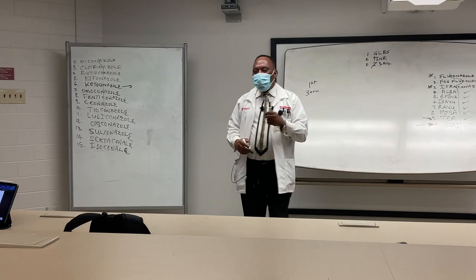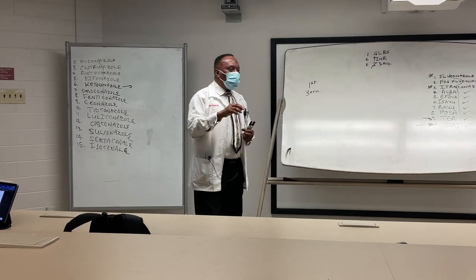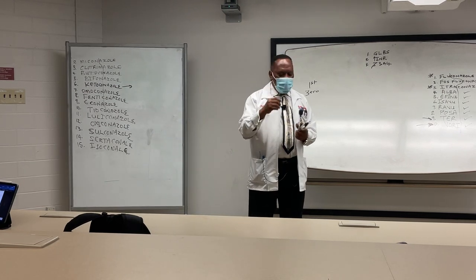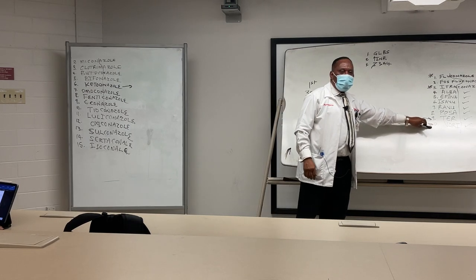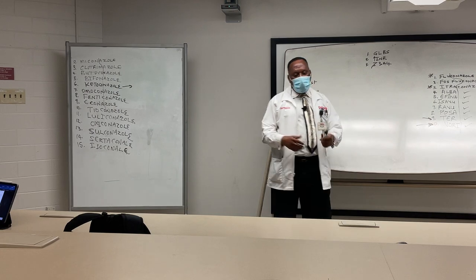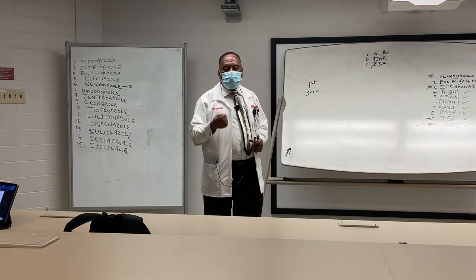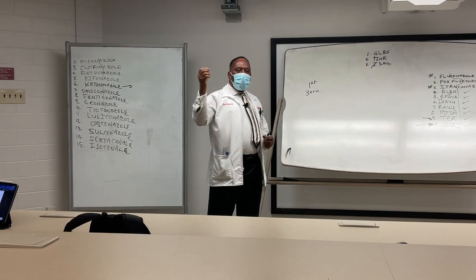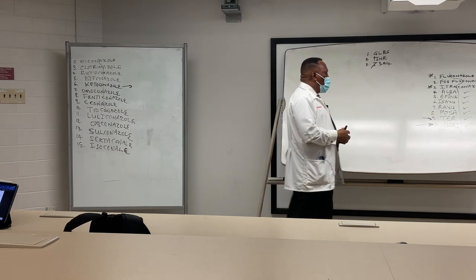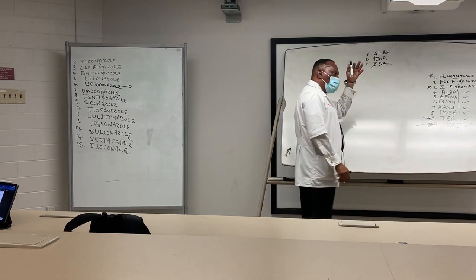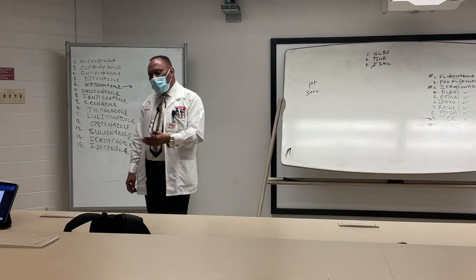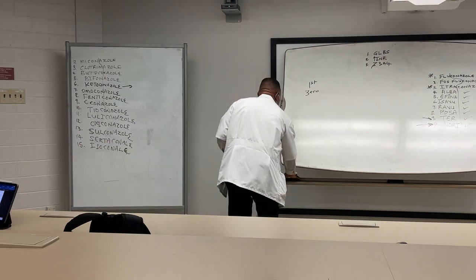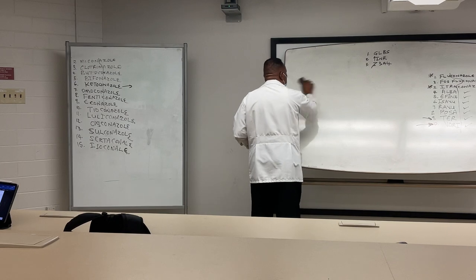If you give voriconazole concurrently with an agent that inhibits CYP3A4, you can suddenly get an increase in plasma concentration, because voriconazole is a substrate for 3A4, 2C9, and 2C19. That's what stands out about that drug — sudden toxicity even with a normal dosage.